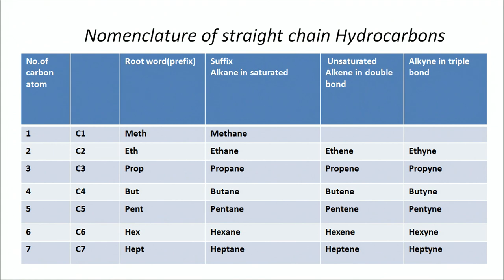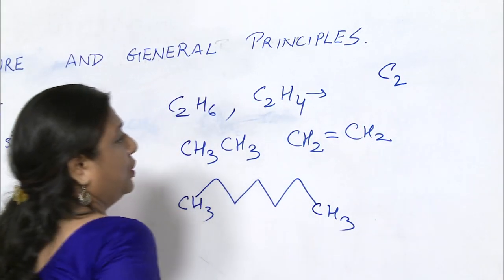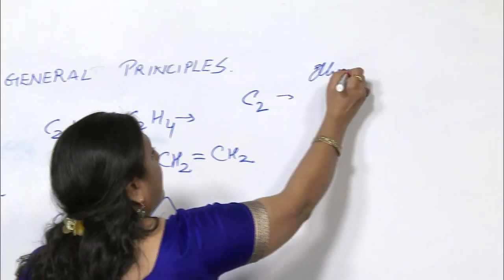The suffix depends on the type of hydrocarbon. If it is a saturated hydrocarbon, the suffix will be 'ane'. If it is unsaturated containing a double bond or triple bond, it will be 'ene' or 'yne'. So when there is one carbon, we call it methane — 'meth' is the root word and 'ane' is the suffix. When you have 2 carbons, the root becomes 'et'; if saturated it will be ethane, if unsaturated it will be ethene or ethyne.